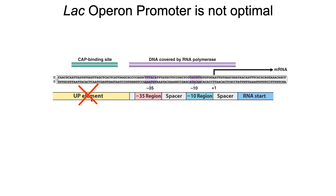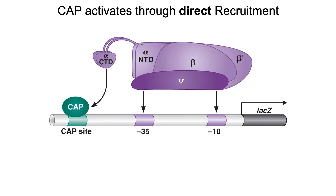Which means that if the CAP protein is not bound to the CAP binding site, the alpha carboxy terminal domain of RNA polymerase can't bind it. Normally, the alpha carboxy terminal domain of the prokaryotic RNA polymerase binds to the up element. But for the lac operon, there is no up element — there's only a CAP site. However, what's been found is that the CAP protein's activation domain binds to the alpha carboxy terminal domain, and it's that binding that stabilizes RNA polymerase onto the promoter and allows for robust transcription.